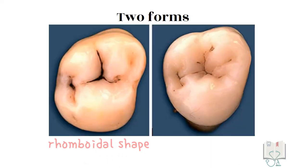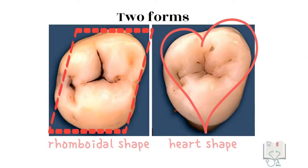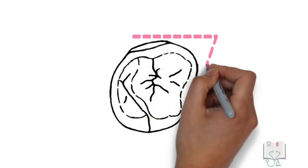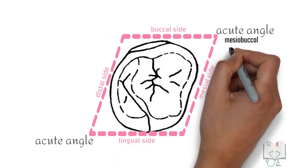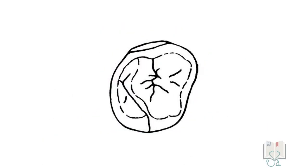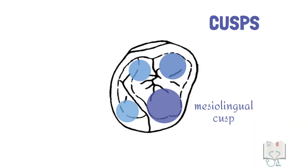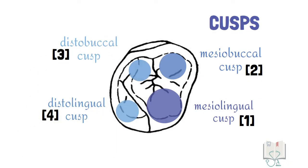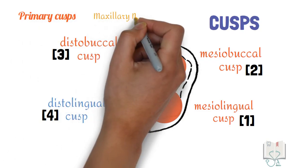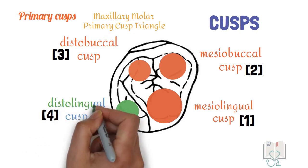Finally, the occlusal aspect. From the occlusal aspect, two types of maxillary second molars are seen: one with a rhomboidal outline form and one with a heart-shaped outline form. This variation is due to differences in the development of the distolingual cusp — it is more developed in the rhomboidal form and less so in the heart-shaped form. The rhomboidal form is more common. The acute angles of the rhomboid are at the mesiobuccal and distolingual line angles, while the obtuse angles are at the distobuccal and mesiolingual line angles. All four cusps are seen: the mesiolingual cusp is the largest, the mesiobuccal cusp is second largest, then the distobuccal cusp, and the distolingual cusp is the smallest. The mesiolingual, mesiobuccal, and distobuccal cusps form the maxillary molar primary cusp triangle, and the distolingual cusp is the secondary cusp.